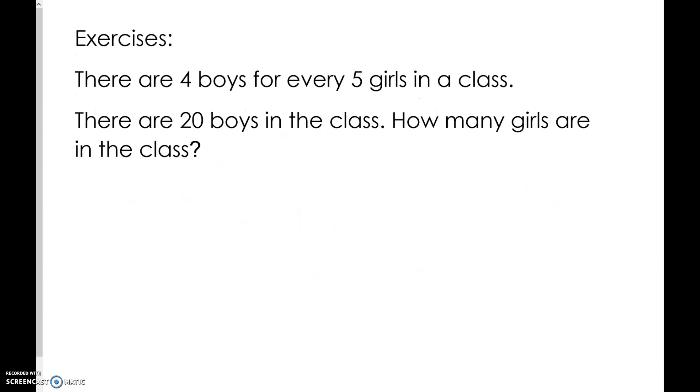Try this exercise on your whiteboard. There are 4 boys for every 5 girls. If there are 20 boys in the class, how many girls will be in the class? To go from 4 to 20, we multiply by 5. 5 times 5 is 25. So if there are 20 boys, there will be 25 girls.